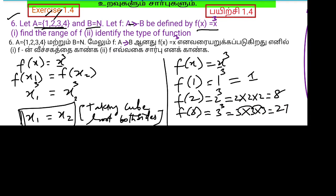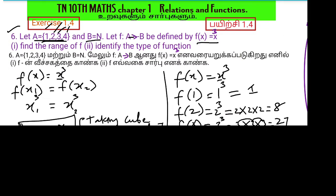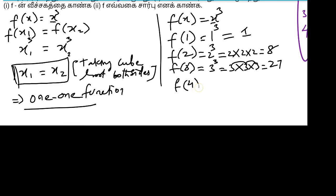F of 4 is equal to 4 cube, that is 4 into 4 into 4, which is 64. Now, this is the arrow diagram.